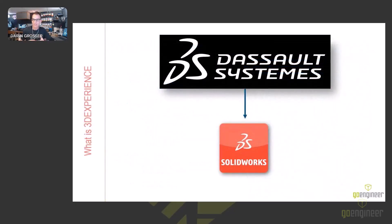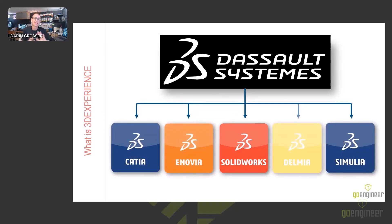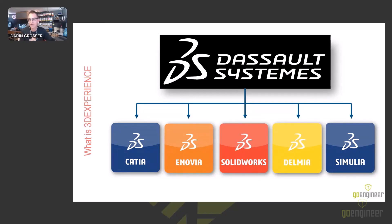SOLIDWORKS has been a wholly owned subsidiary of Dassault Systèmes since 1997 — about 27 years. Dassault Systèmes is massive, with a bunch of different sister products across different verticals: their sister CAD product CATIA, Inovia which we'll talk about today as our data management PLM tools, Delmia and Simulia for high-end cloud simulation and manufacturing tools, robot programming and machining. It's a very awesome portfolio, and there are seven other brands not even listed here that are just as mature and useful.